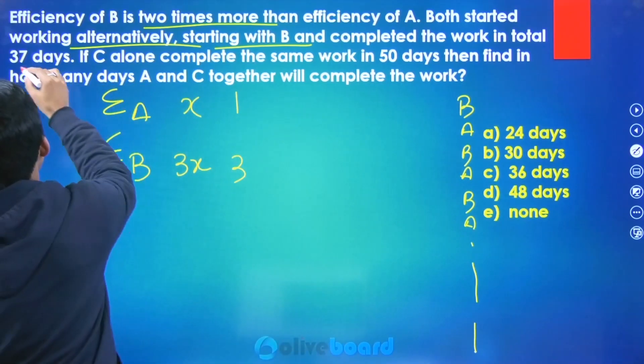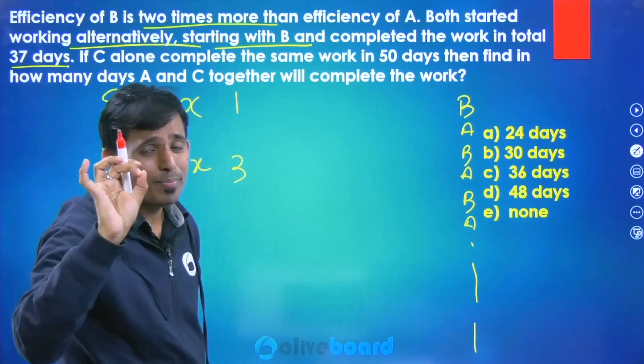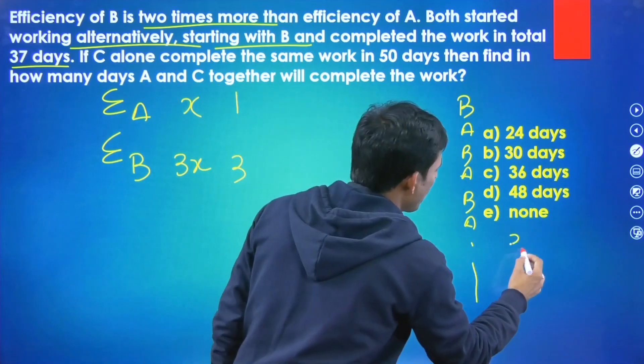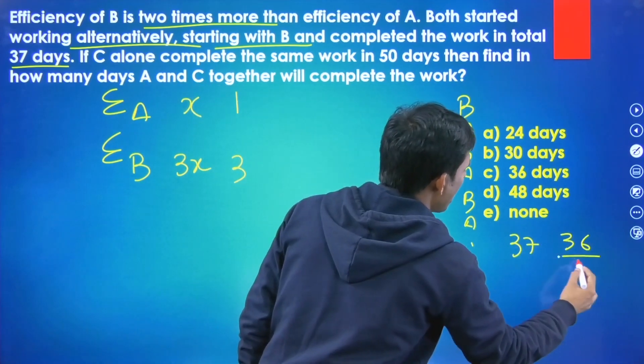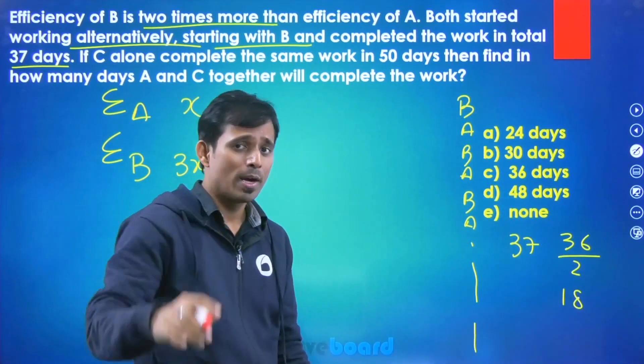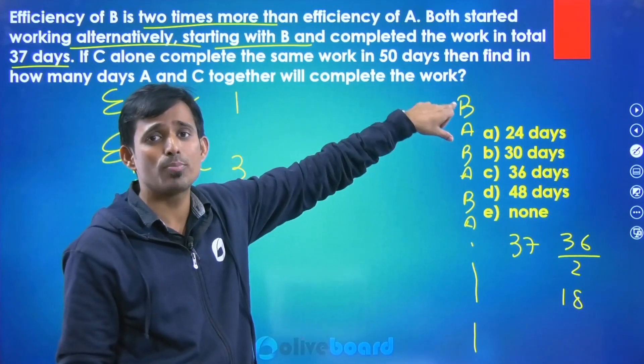So total 37 days. It means 37 ka agar ham log half karenge to 36 ka half, 18 days both will work. But who will come to start the work? That is B. So last day, this is the odd day, to definitely 37 day pe B.